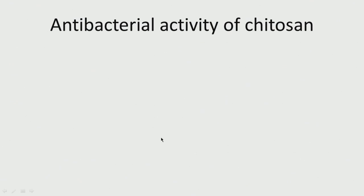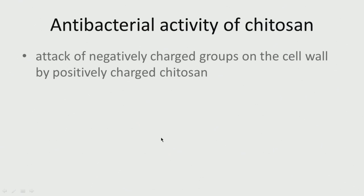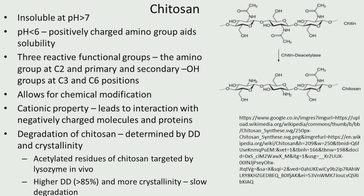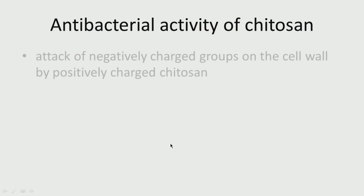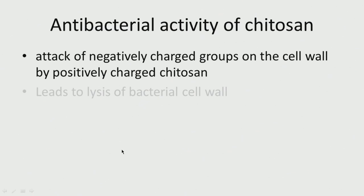Antibacterial activity of chitosan: it attacks negatively charged groups on the cell wall using its positively charged NH3+ groups. As you can see, the positively charged N+ attacks the negatively charged groups on the bacterial cell wall, causing cell wall breakage and lysis of the bacterial cell. So chitosan exhibits antibacterial properties.